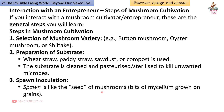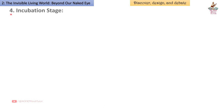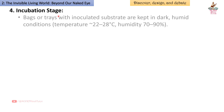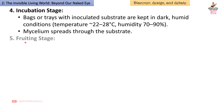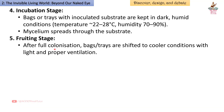Spawn is like the seed of mushrooms — bits of mycelium grown on grains — mixed into the prepared substrate. Fourth — incubation stage: bags or trays with inoculated substrate are kept in dark, humid conditions at approximately 22–28°C and 70–90% humidity. Mycelium spreads through the substrate.